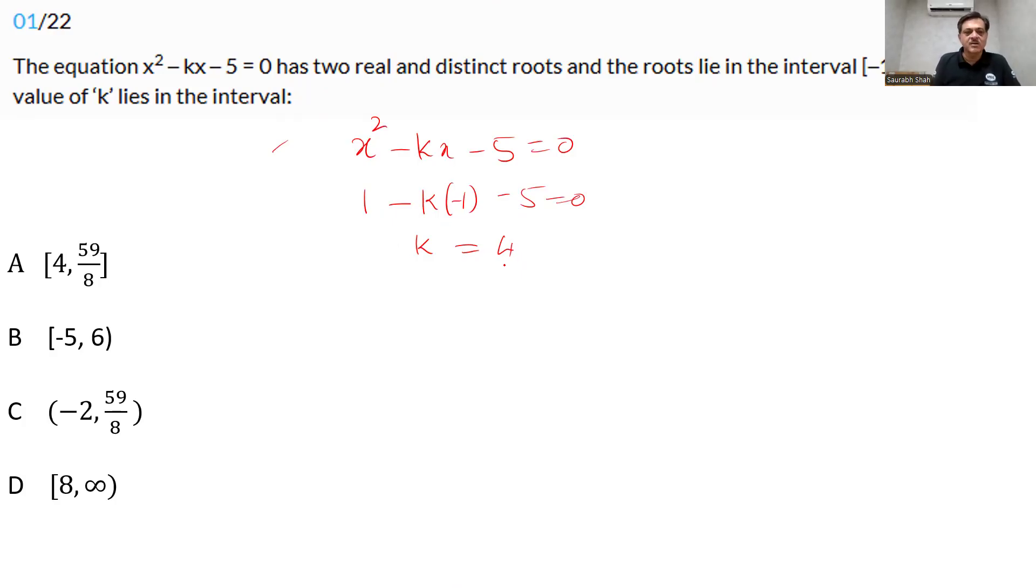Now this actually gives you an answer directly here. There is only one option which has 4 as a limit. And of course it's a closed limit. We don't know whether 4 is an upper limit or lower limit right now. But we know that 4 is one of the limits and we only have one option.